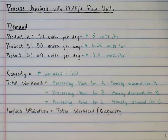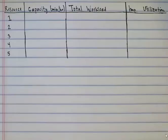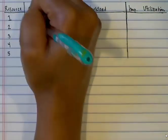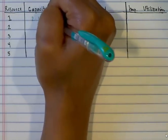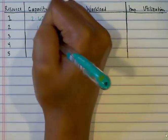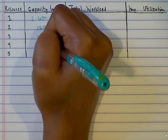The resource with the highest implied utilization is our bottleneck. For resource 1, capacity is 2 workers times 60 minutes per hour, which equals 120. For resource 2, a similar calculation gives us 120, and we can do the same calculations for the remaining resources.